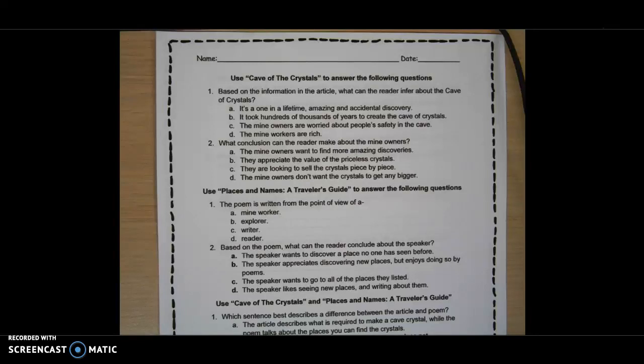Use Cave of Crystals to answer the following questions. 1. Based on the information in the article, what can the reader infer about the Cave of Crystals? A. It's a one-in-a-lifetime amazing and accidental discovery. B. It took hundreds of thousands of years to create the Cave of Crystals. C. The mine owners are worried about people's safety in the cave. Or D. The mine workers are rich.